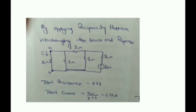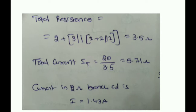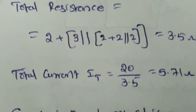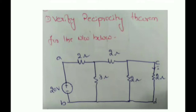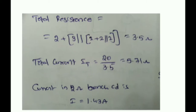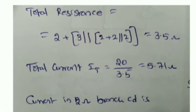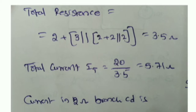Here is the problem solution. First, you need to find the total resistance. The 2Ω is in parallel with 2Ω, which is connected in series with another 2Ω, then that is in parallel with 3Ω, and that combination is in series with the final 2Ω. From this, 3.5Ω is the total resistance. The total current is 20 divided by 3.5, which equals 5.71 amperes.